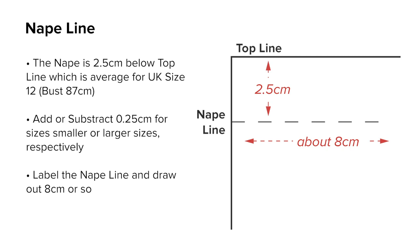The nape line. For an 88 centimeter bust, the nape line is 2.5 centimeters down from the top line. This is average for UK size 12, bust 87 centimeters. Add or subtract 0.25 centimeters for sizes smaller or larger respectively. Measure down from the top line 2.5 centimeters and label it nape line.